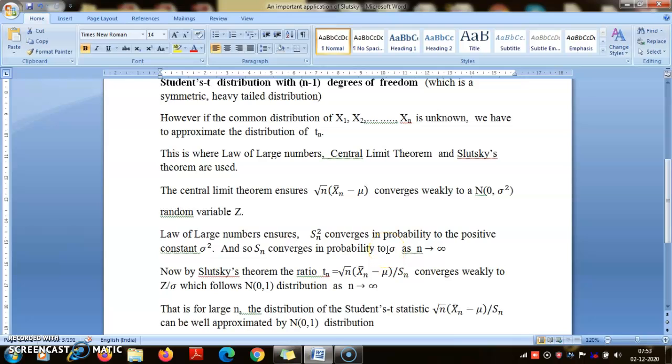So now Slutsky's theorem can be used. Since the constant is a positive constant, by the third statement of Slutsky's theorem, this ratio Tn converges weakly to Z by that constant. And so this follows N(0,1) distribution.